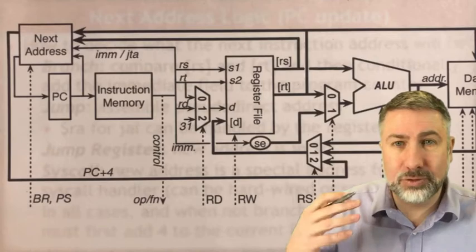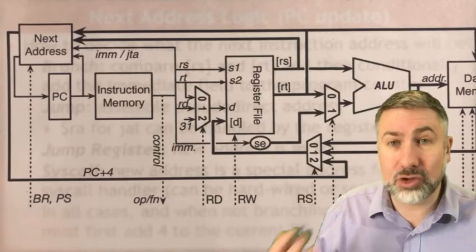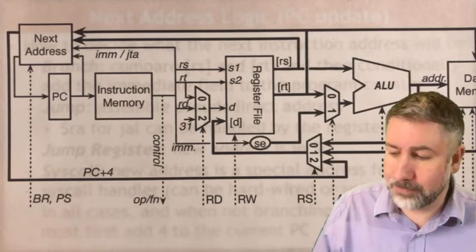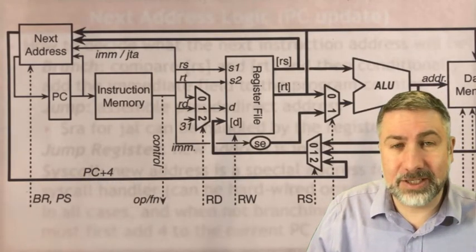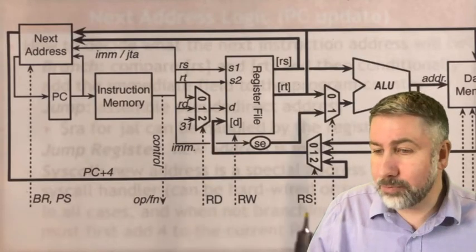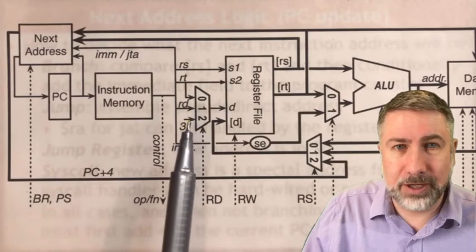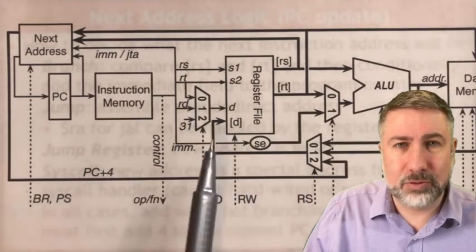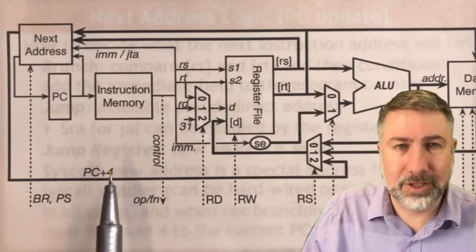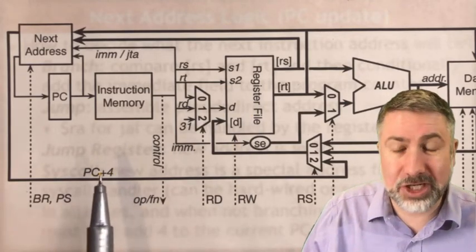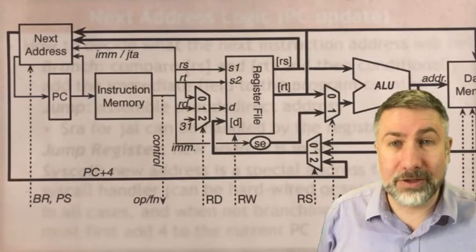For jump and link, we have two inherent operands that tell the register file to store the current value of the program counter — PC plus 4 — in the register file at address 31, which is our return address. So we use 31 and PC plus 4, which stores the address of the next instruction after the jump, and also allows us to put a new value into the program counter.